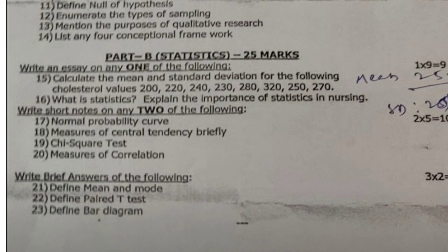For brief answers in Part B, there is no choice — you must answer all 3 questions. Question 21: define mean and mode. Question 22: define paired t-test. Question 23: define bar diagram. Each carries 2 marks, so 3 into 2 equals 6 marks.